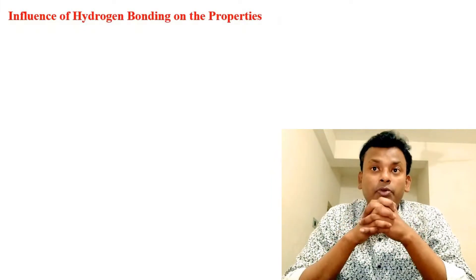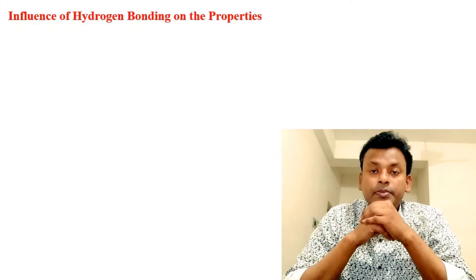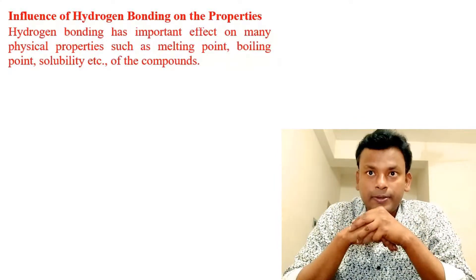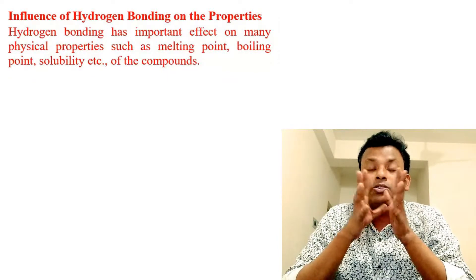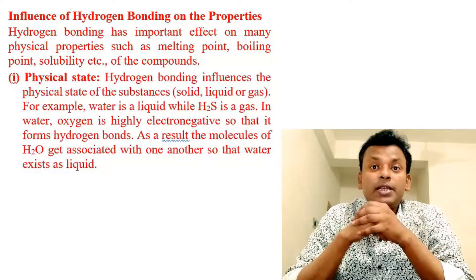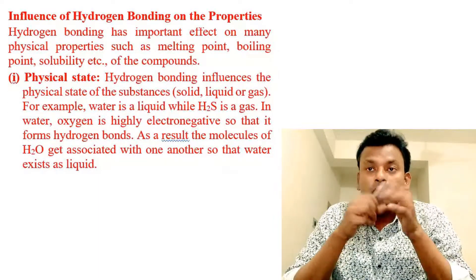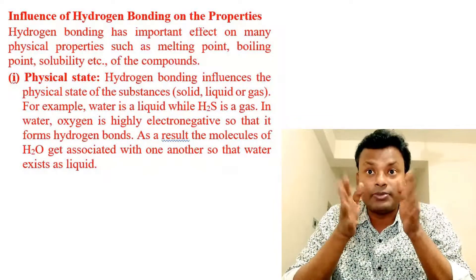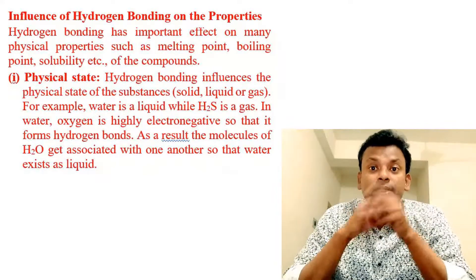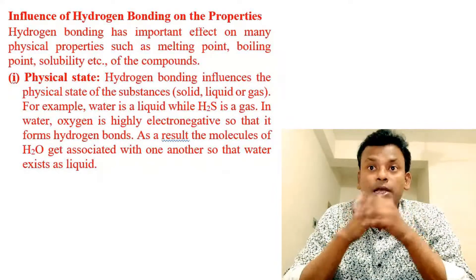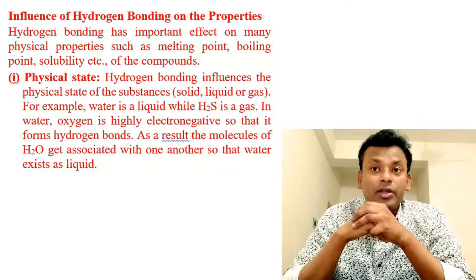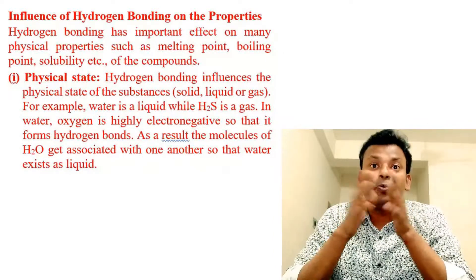Influence of hydrogen bonding on properties: hydrogen bonding has an important effect on many physical properties such as melting point, boiling point, solubility, etc. First point — physical state: hydrogen bonding influences the physical state of a substance, whether solid, liquid, or gas. For example, water is a liquid while H₂S is a gas. In water, oxygen is highly electronegative so it forms hydrogen bonds.